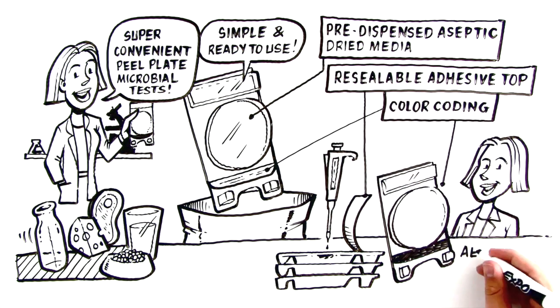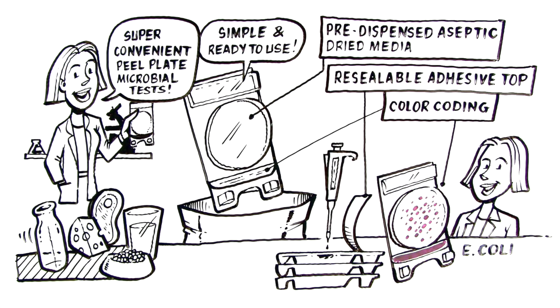Color-coding makes it easy to tell aerobic bacteria from coliform and E. coli, or yeast and mold.